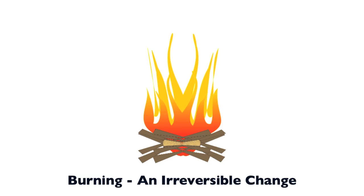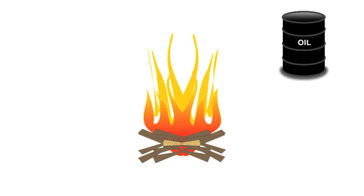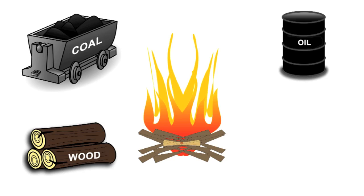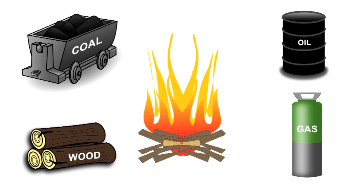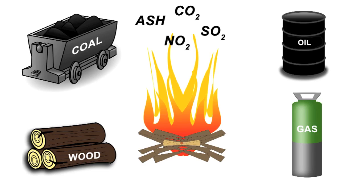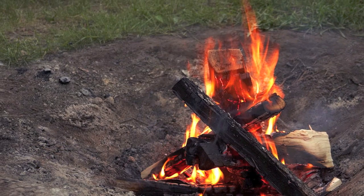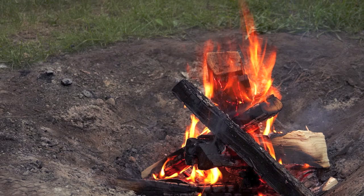Burning is yet another irreversible change. We burn materials such as oil, coal, wood, and gas to get heat and energy. But at the same time, new materials such as ash, carbon dioxide, and other potentially harmful gases are produced. It is nearly impossible to get back the original things burned from these new materials. So burning is a very good example of irreversible change.